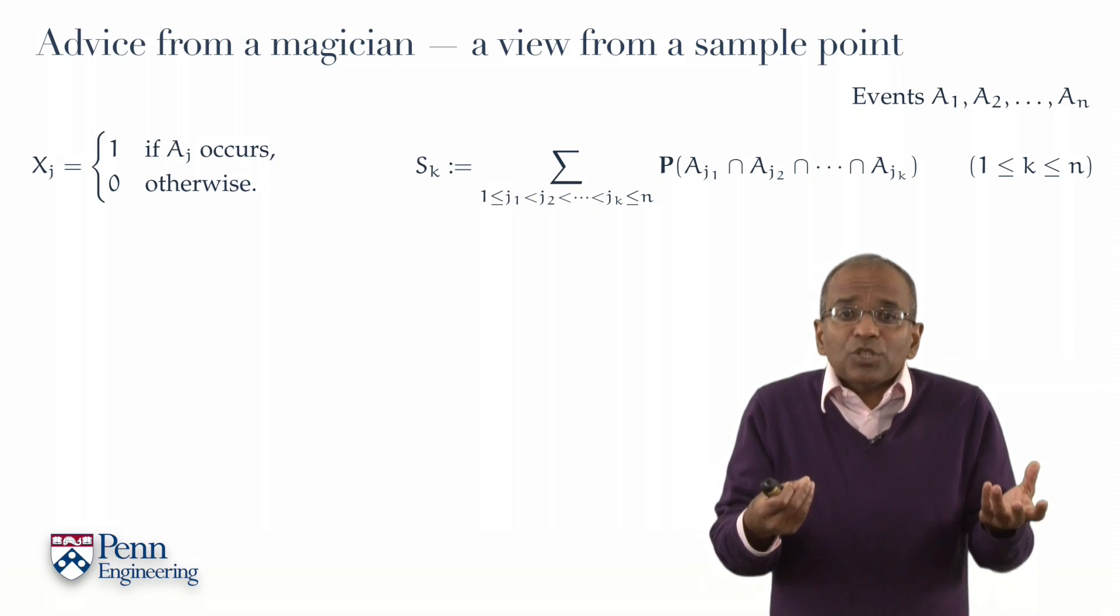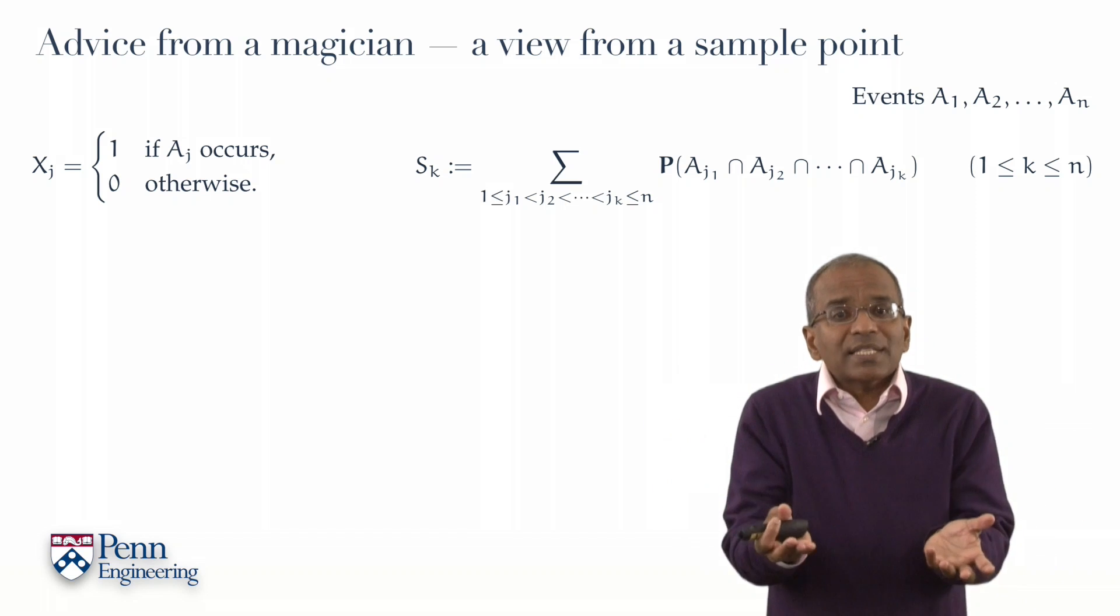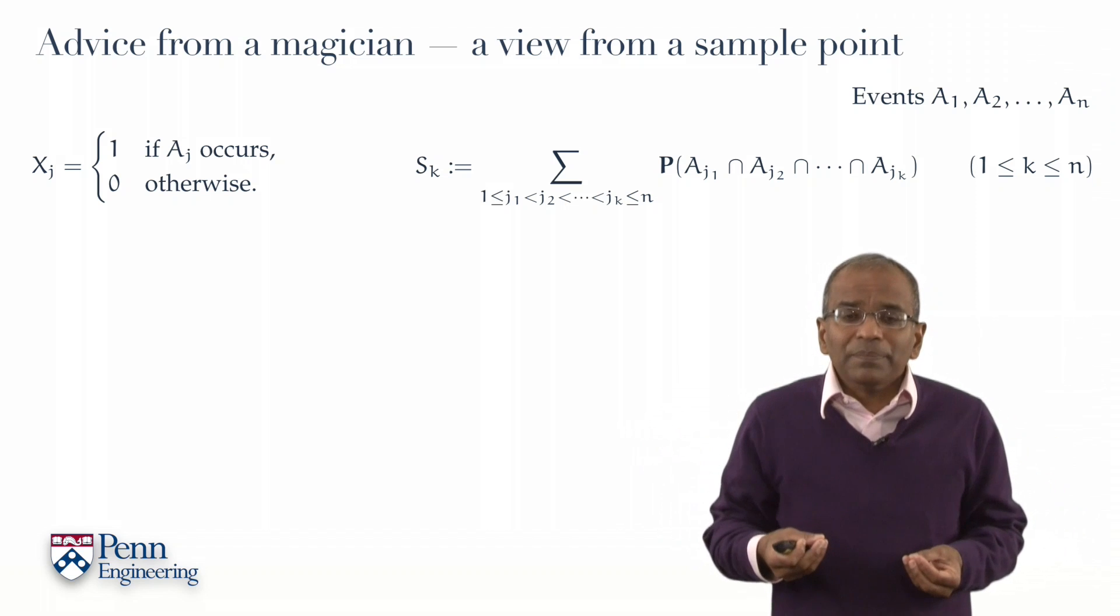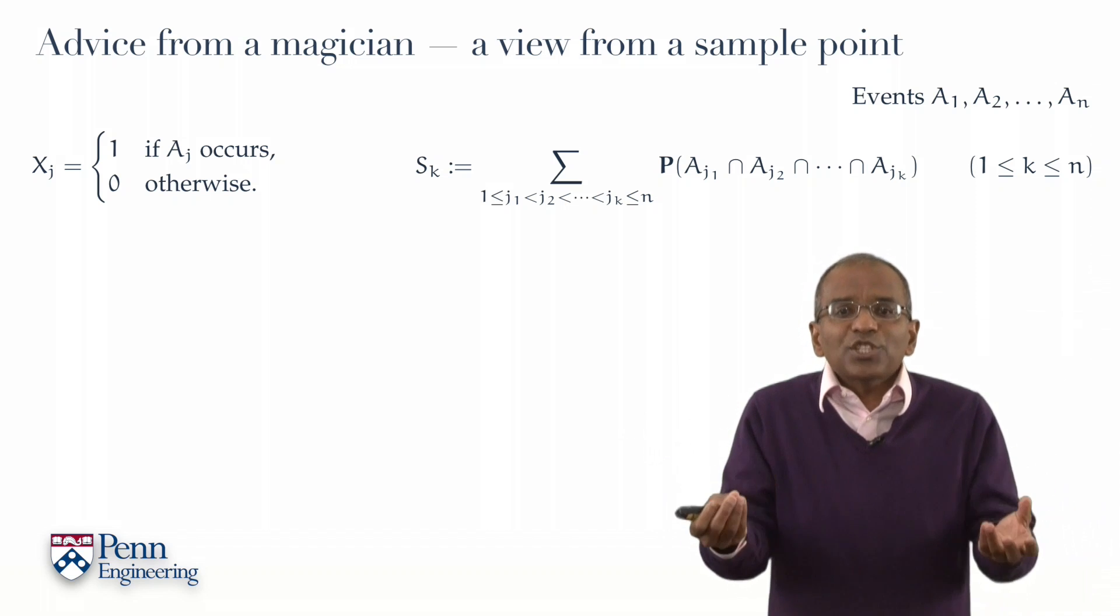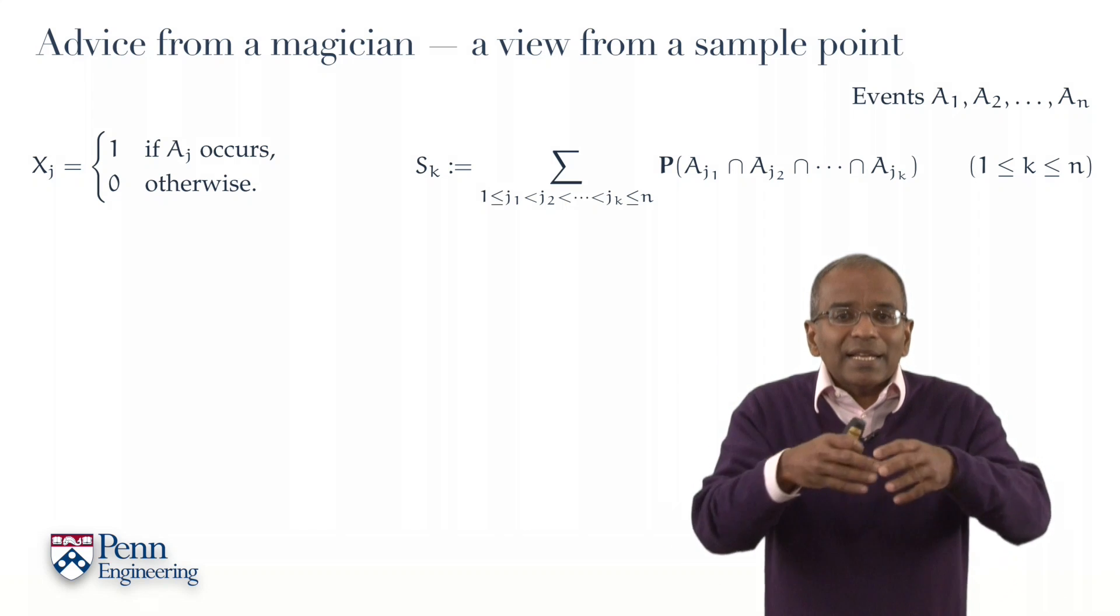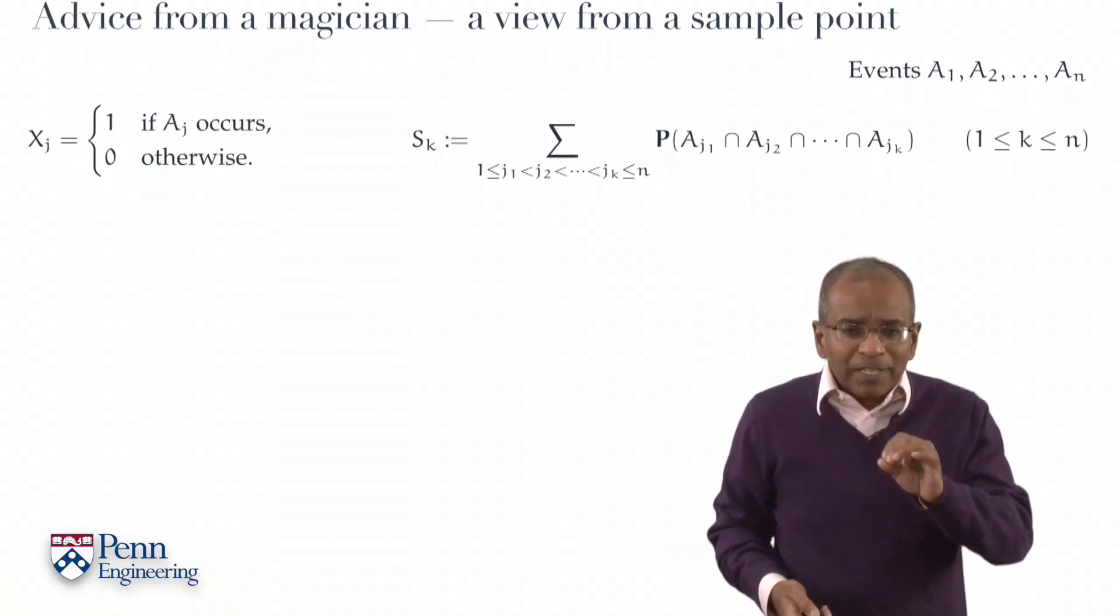If you replace k by k plus 2, then simply add all k plus 2 wise intersection probabilities, replacing k by k plus 2 in the sum. And likewise, Sk plus j for a generic j would be the sum of all the k plus j wise intersection probabilities, replace k by k plus j in the sum. Good.